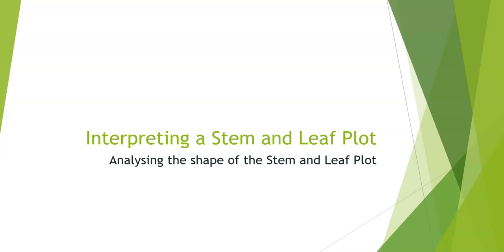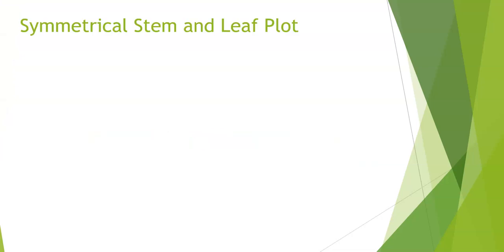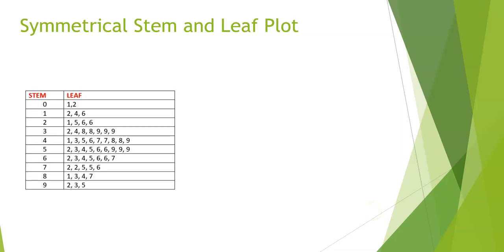There are four different types of stem and leaf plots that we can talk about. First of all, let's look at a symmetrical stem and leaf plot. This stem and leaf plot is symmetrical because we can see that the majority of the data is situated in the center of the plot, and we can also see that there is a peak in the data here.